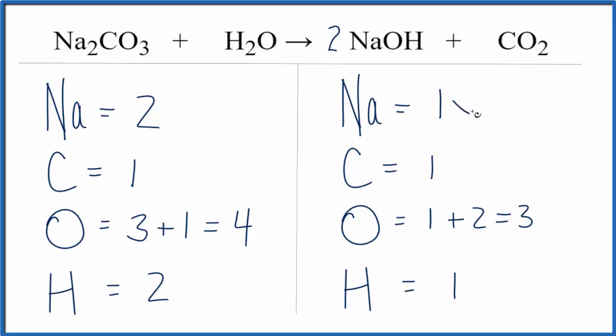So we have one Na times two, that gives us two of those, and then let's update our oxygen. We have the one oxygen times the two, there's two oxygens, plus we have these two in the CO2, that'll give us four oxygen atoms.